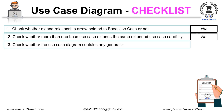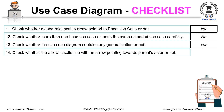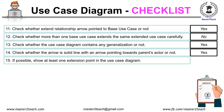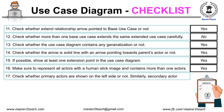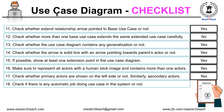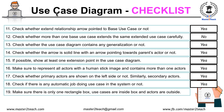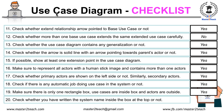Check whether more than one base use case extends or includes the same extended or included use case carefully. Check whether the use case diagram contains any generalization. Check whether the arrow is a solid line pointing towards the parent actor or parent use case, and confirm there is no label on the arrow. If possible, show at least one extension point. Make sure all actors are represented with a humanistic image, even for machines and external devices, and the diagram contains more than one actor. Check whether primary actors are on the left side and secondary actors are on the right side. Check if there are any automatic job use cases. Make sure there is only one rectangle box with all use cases inside and actors outside, and check whether the system name is written inside the box at the top.